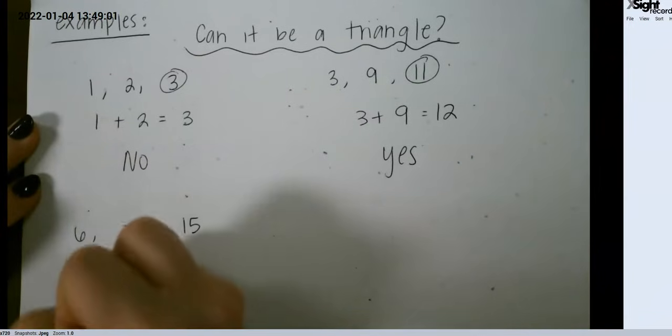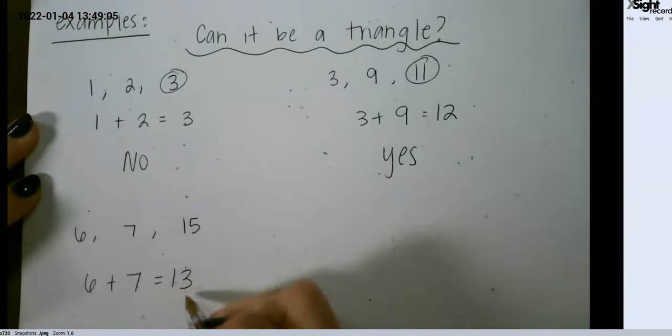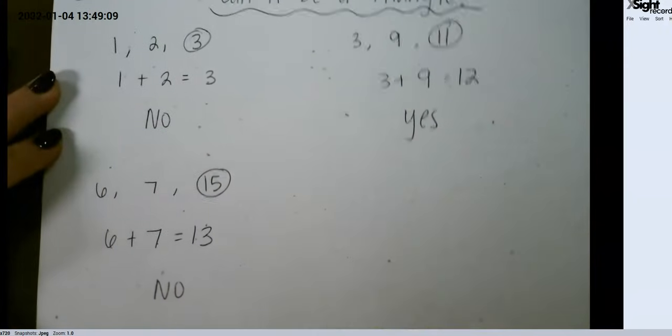And for our last example, it is not greater than 15. So this one cannot make a triangle.